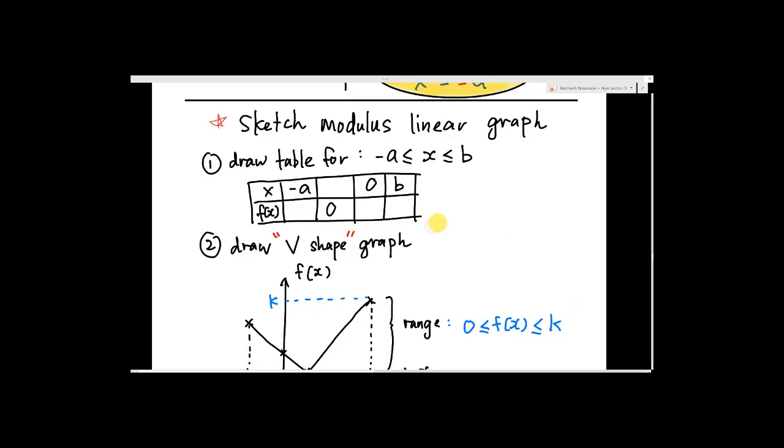For modulus, if you go to higher level you will learn about modulus quadratic graph, but in SPM you only cover the linear graph. The modulus linear graph has a confirmed shape - always the V shape. The shape is already fixed, so you don't need to worry about what pattern the line will look like.